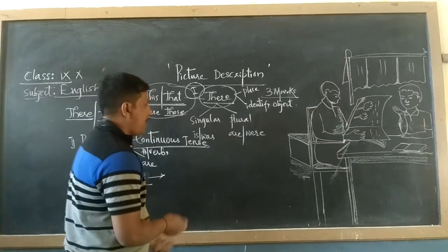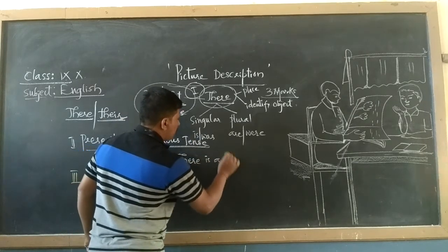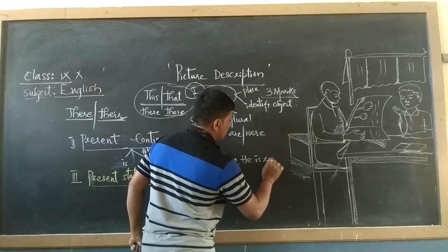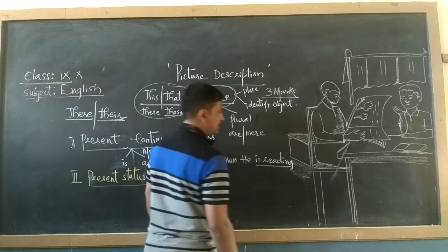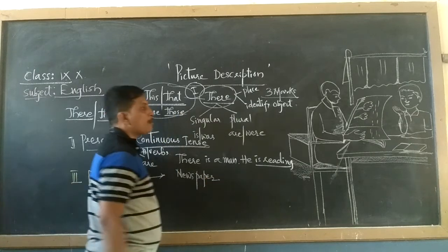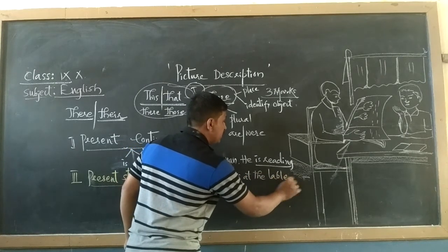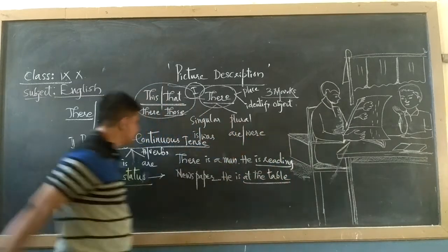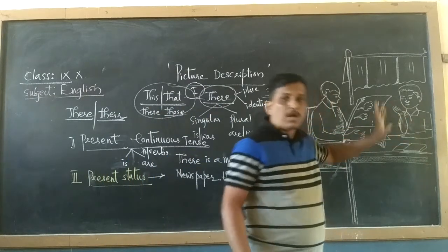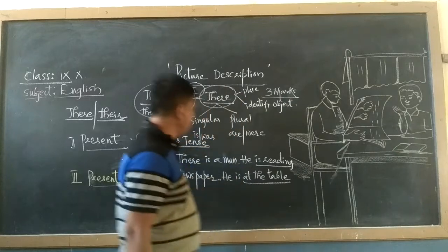Present status means: 'There is a man. He is reading a newspaper. He is at the table.' Where is he? 'At the table' is the present status of that person. 'There is a boy. He is looking at his father. The boy is also at the table.' Here, 'there is a man' is one sentence, 'he is reading a newspaper' is a second sentence, and 'he is at the table' is a third sentence.